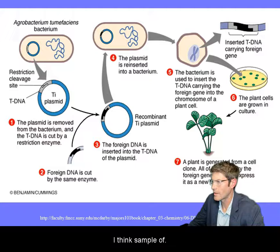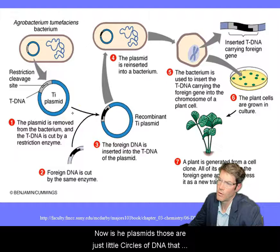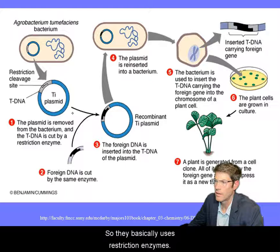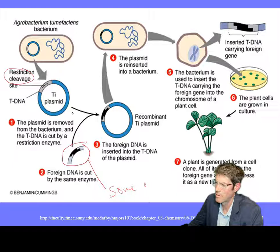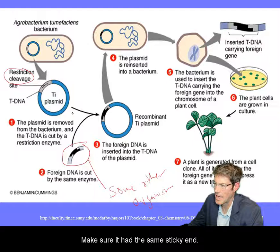Here is an example. You see plasmids — those are just little circles of DNA that are in bacteria. They basically use a restriction enzyme to cut the plasmid in a certain way, and they'll also take the foreign DNA from some other animal or organism.